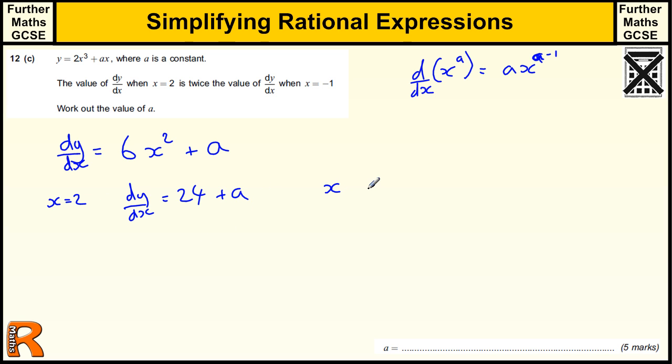And when x is minus 1, dy/dx equals 6 times (-1)² plus a. So that's going to be -1 squared is 1. So that's just 6 plus a. And we're told that this value is twice the value of this. So this one is bigger than this one. And so it tells us that 24 plus a equals twice (6 plus a).